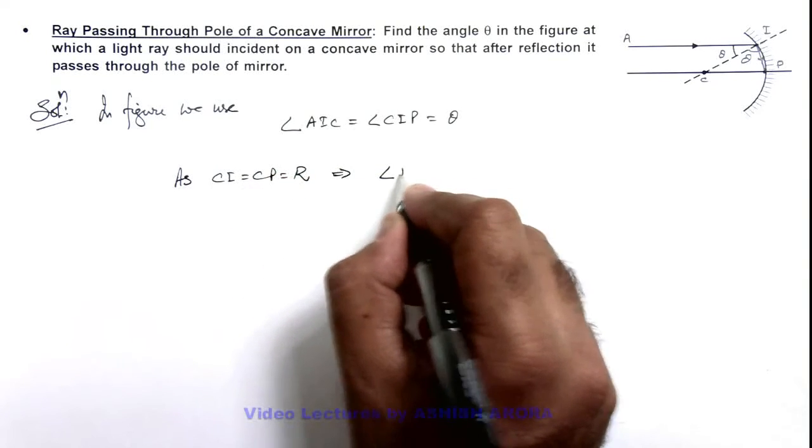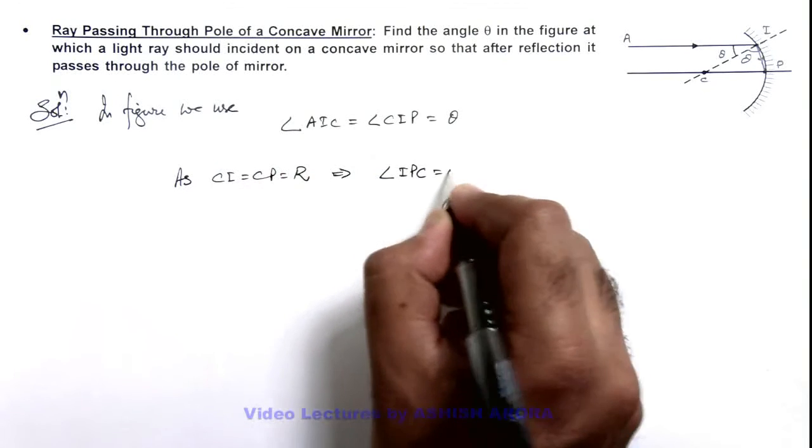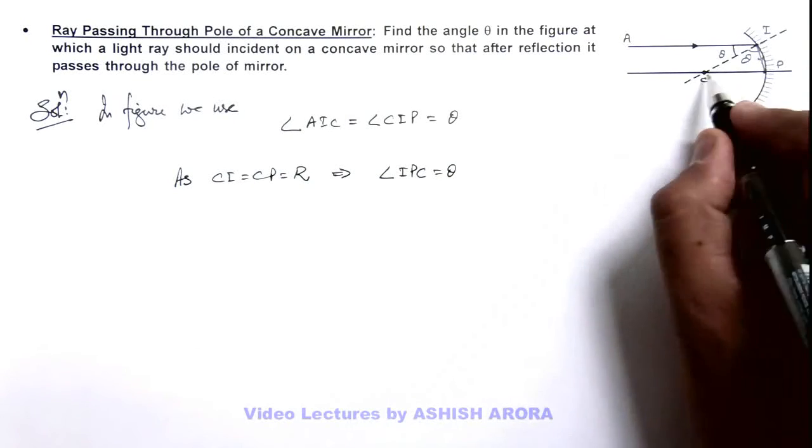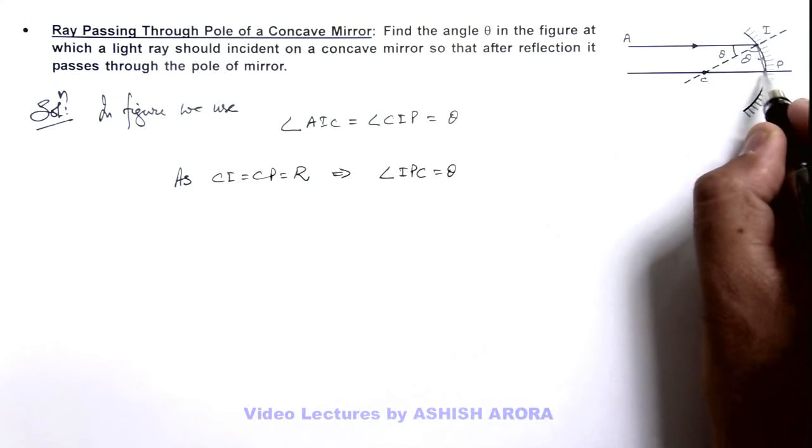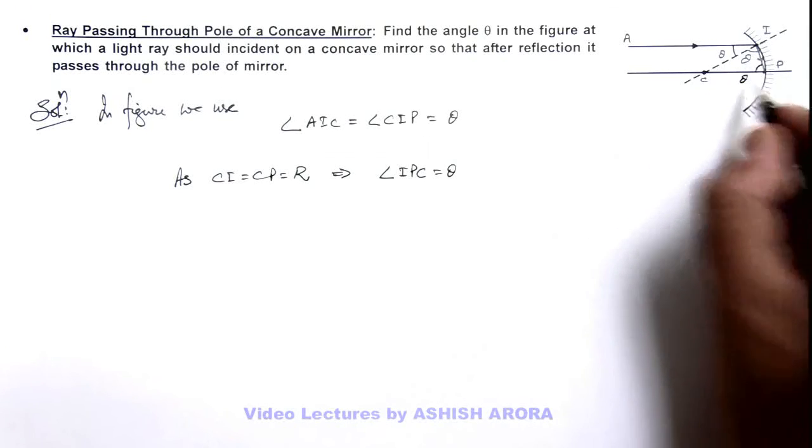Angle IPC is also equal to theta. If these lengths are equal to the radius of curvature, this will be an isosceles triangle and this angle will also be theta.